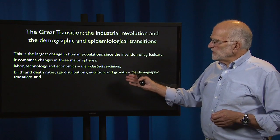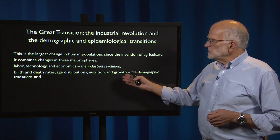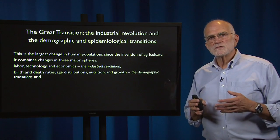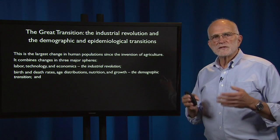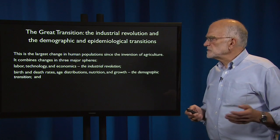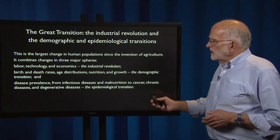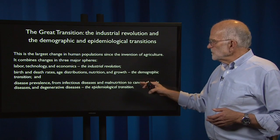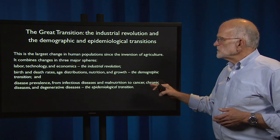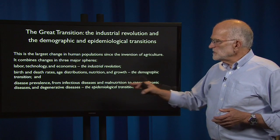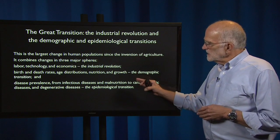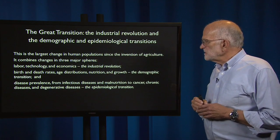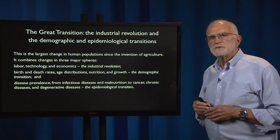In birth and death rates, age distributions, nutrition, and growth, we refer to it as the demographic transition. And in disease prevalence — from infectious disease and malnutrition to cancer, chronic disease, and degenerative disease — we refer to it as the epidemiological transition.